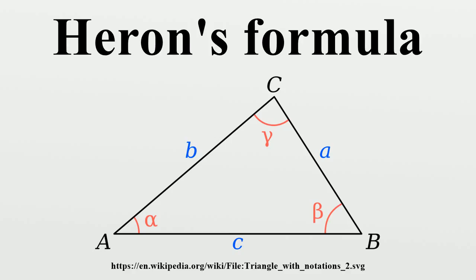Let ABC be the triangle with sides a equals 4, b equals 13, and c equals 15. The semi-perimeter is s equals one-half times 32 equals 16.